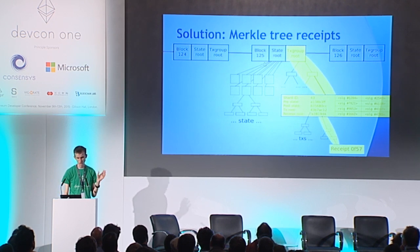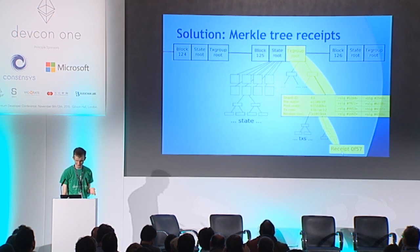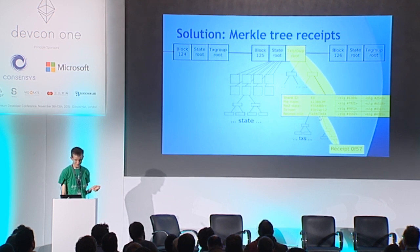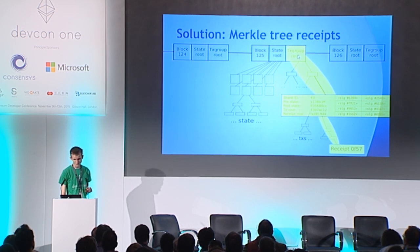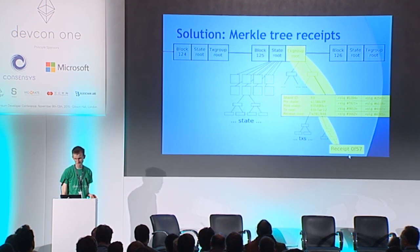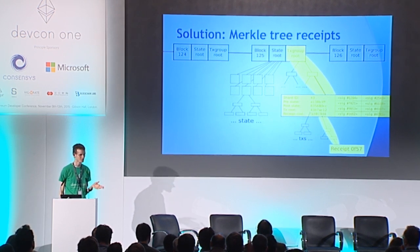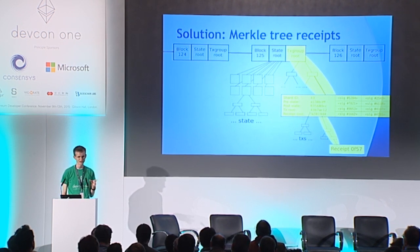The basic ingredient is Merkle tree receipts. If you look at one particular receipt, you notice it's part of a tree with a Merkle root, and that is itself part of another tree with another Merkle root. You can come up with a fairly compact branch — a proof that the receipt was actually included at a particular time. This gives you proof of existence, and we're going to add proof of non-double-spending in the correct shard.